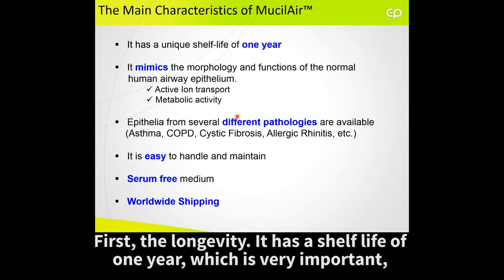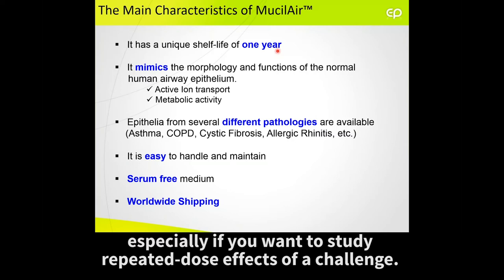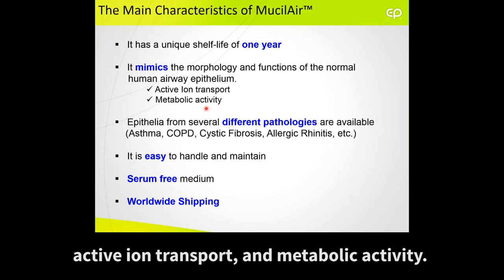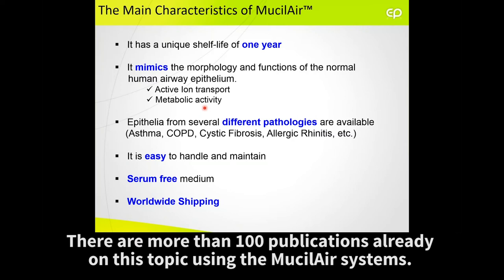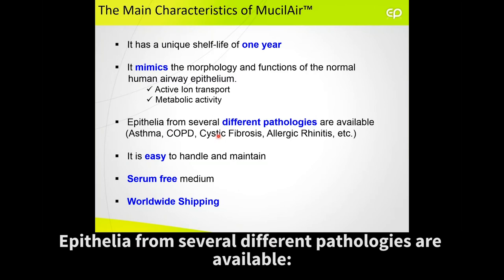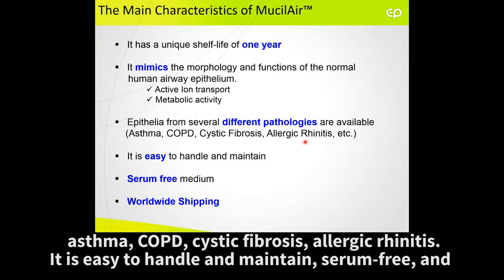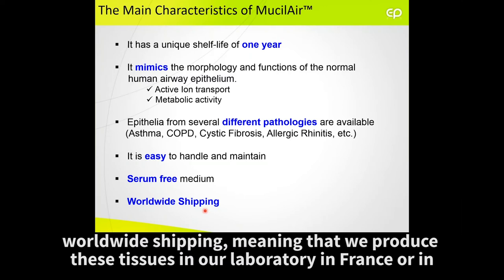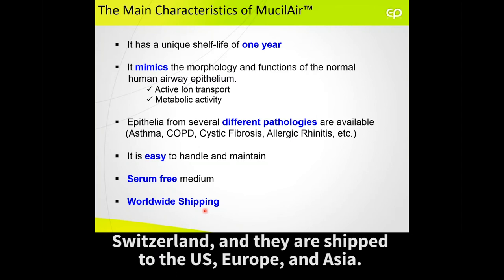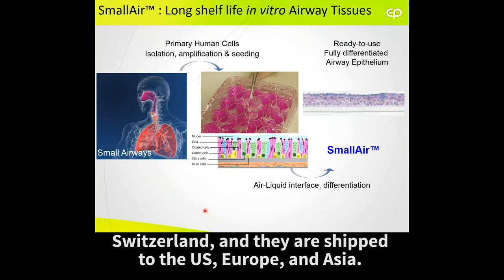So what are the main characteristics of the MucilAir? First, the longevity — it has a shelf life of one year, which is very important, especially if you want to study repeated dose effects of a challenge. It mimics the morphology and function of the normal airway epithelium, active ion transport, metabolic activity. More than 100 publications are already published using MucilAir systems. Epithelia from several different pathologies are available: asthma, COPD, cystic fibrosis, allergic rhinitis. Easy to handle and maintain. Serum free. And worldwide shipping — we produce these tissues in our laboratory in France or in Switzerland, and they are shipped to the US, Europe, and Asia.